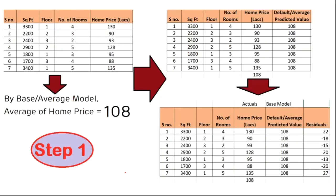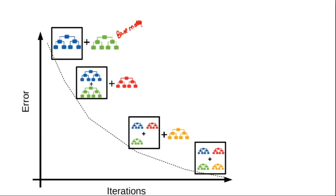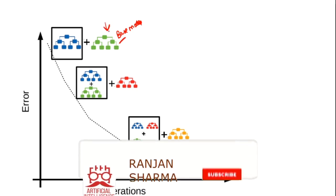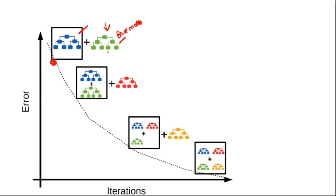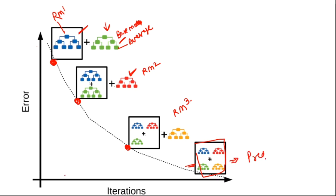The base model gives some average, then we use another decision tree (RM1). At that point the error reduces, then RM2 reduces it further, then RM3 further reduces it. At the end we add all the models to get the final predicted output with minimal error. The number of iterations continues — at the sixth iteration the error reaches zero or minimum.